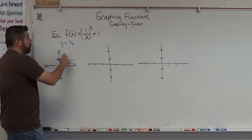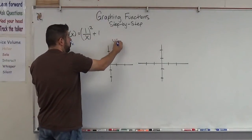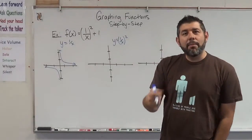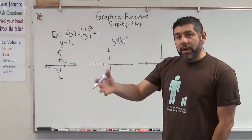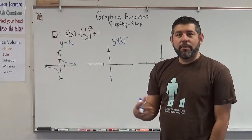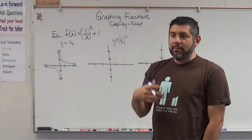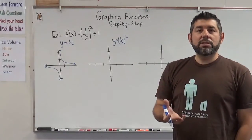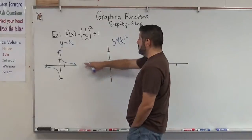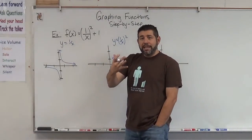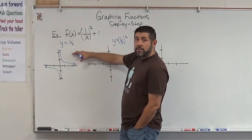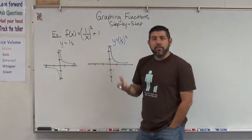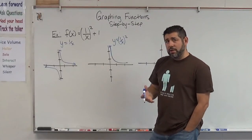Now we're going to take this graph and square it to get 1 over x squared. We have to think about what squaring a function does. If I had a negative number and squared it, it would get bigger for values greater than 1 and also become positive. Negative 2 squared is positive 4; negative 4 squared is positive 16 — it increases quicker and makes everything positive. This part of the graph is already above the x-axis, so it's going to stay the same when we square it — it just remains positive and may increase quicker, but that doesn't change the graph much.